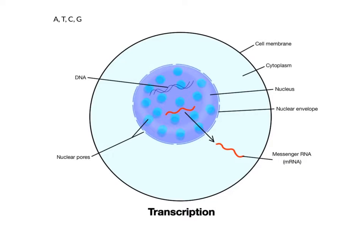Transcription takes place inside the nucleus of a cell. In the first step, DNA is used to help make a copy of one gene onto a molecule of messenger RNA. The DNA molecule, which is double-stranded, must be unzipped or unwound to expose the bases A, T, C, and G that are used as a template or pattern to make an RNA copy of the gene.